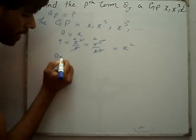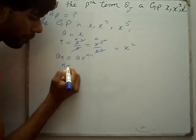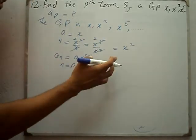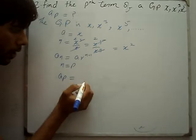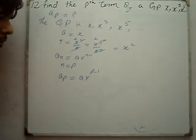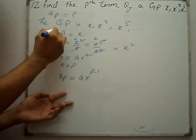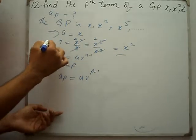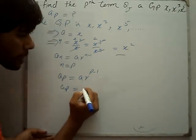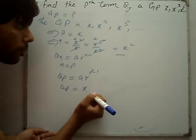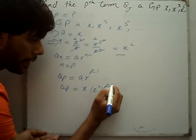So what is our formula? A_n is equal to a · r^(n-1). In place of n, we put p. In place of a, we put x. In place of r, we put x². So we get x · (x²)^(p-1).